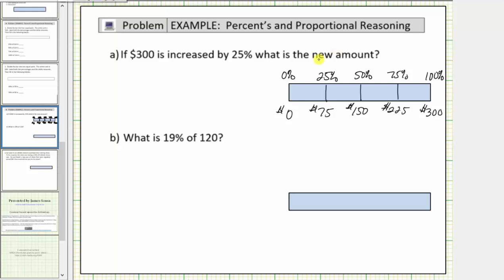Now using the bar, we can see that 25% of 300 is $75. And therefore if $300 is increased by 25%, it's increased by $75. Because 300 plus 75 is equal to $375, the new amount is $375.